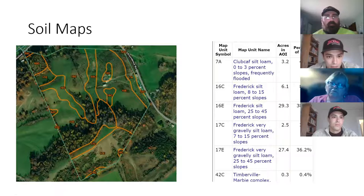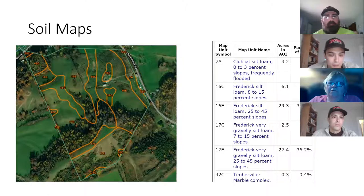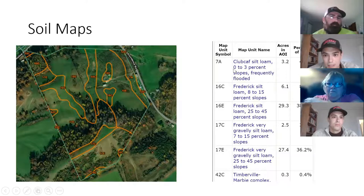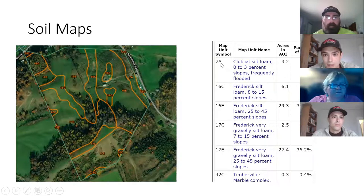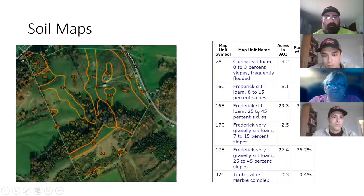Letters behind a number generally are indicators of slope class. A smaller letter — if A is small — means it's a flatter surface, and the further you get into the alphabet, the steeper the slope. You can see that by the table showing slope percents: for an A slope it's 0 to 3 percent, and down at the E slope that's 25 to 45 percent slope. So there's a lot of water moving off that surface rather than being absorbed.